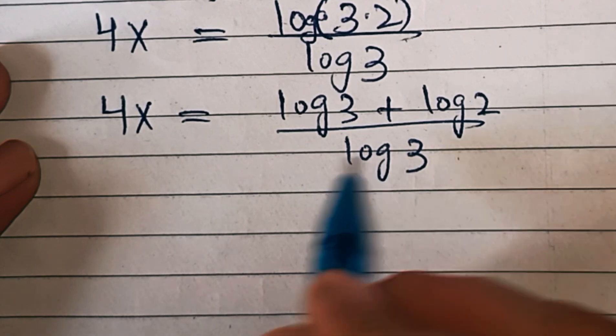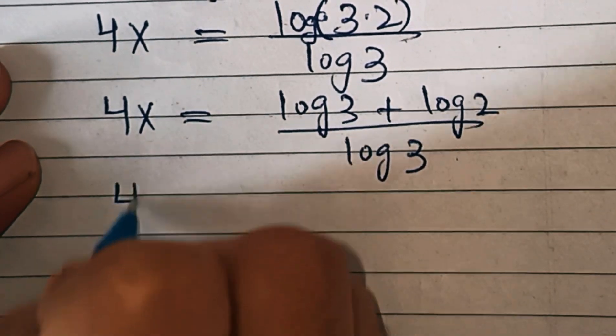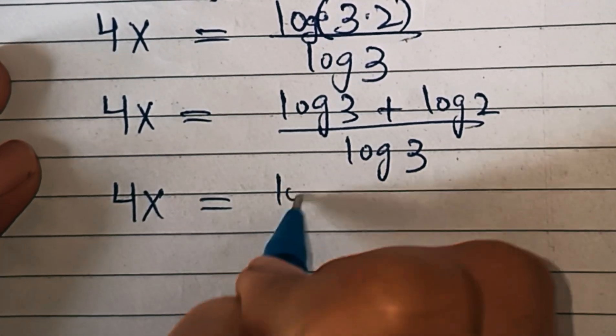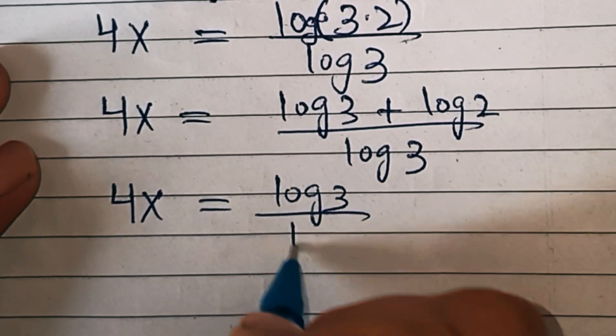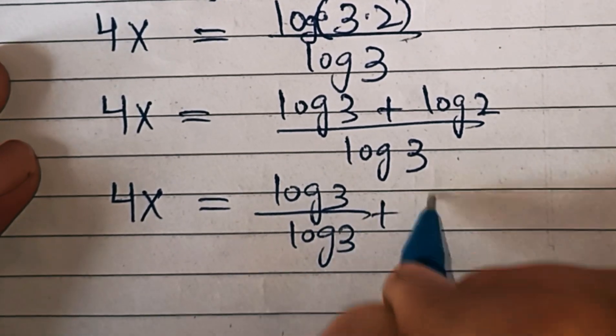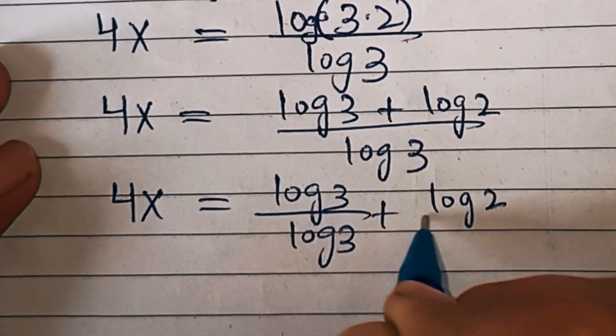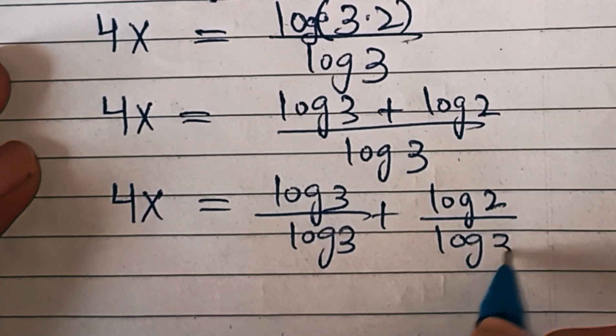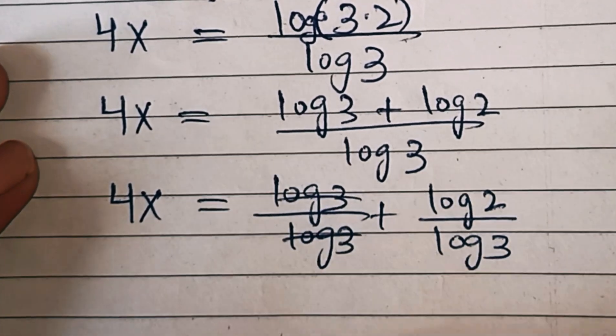We'll divide separately by log of 3, so 4x equals log of 3 over log of 3 plus log of 2 over log of 3. The log of 3 over log of 3 cancels out.